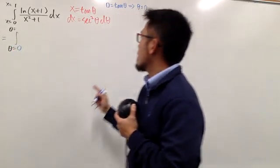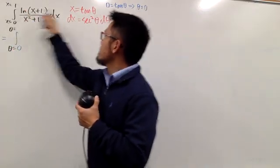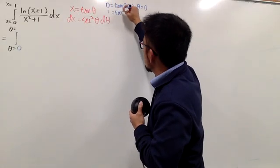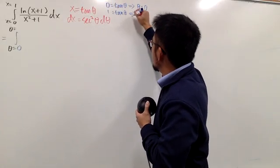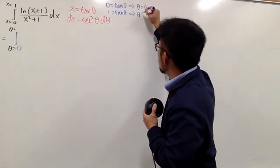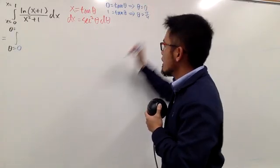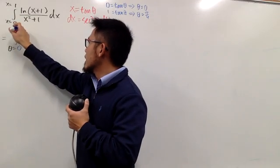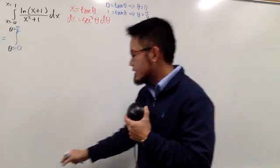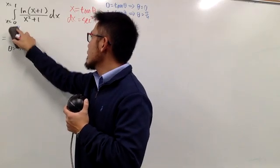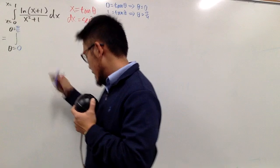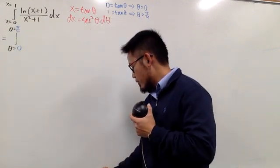So the lower limit is θ = 0. If x = 1, then 1 = tan θ, which tells us that tan(π/4) = 1, so the upper limit is θ = π/4. Since this is a definite integral, we just care about the final value.